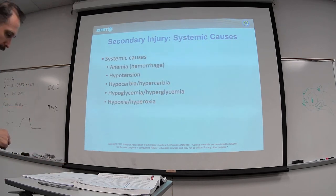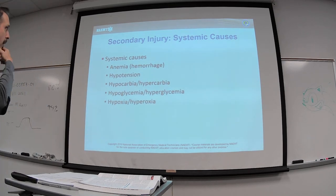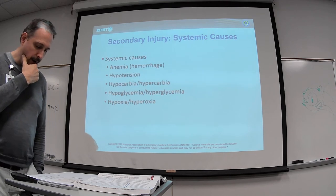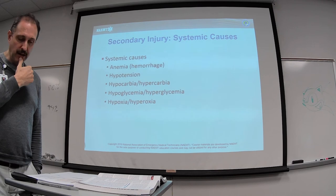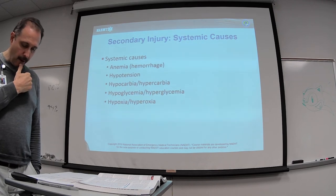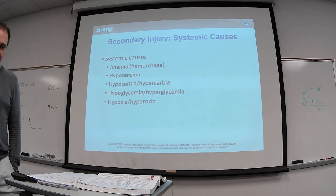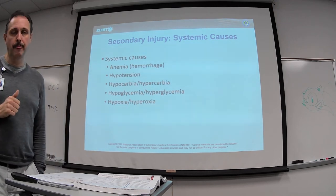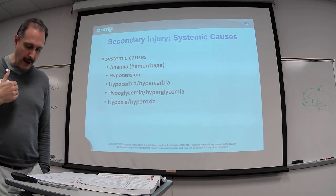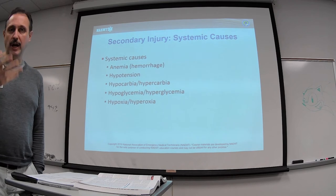Now, systematic causes related to secondary injury. First, anemia — it's a hemorrhage, but more specifically a lack of blood flow that can cause an ischemic injury. When you have a hemorrhage causing a restriction of blood flow through the spinal cord, that creates additional injury.